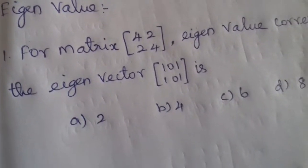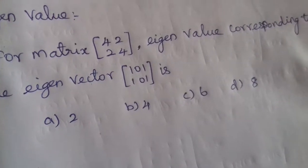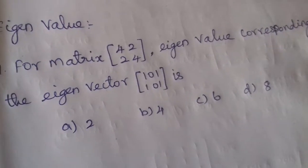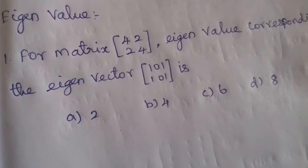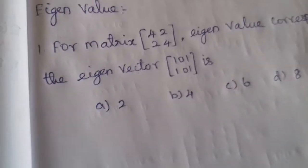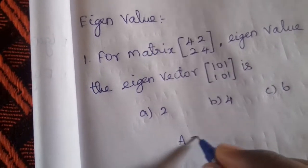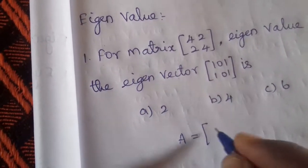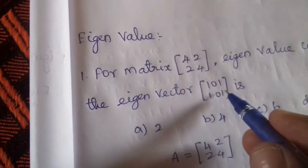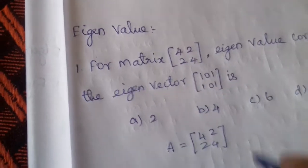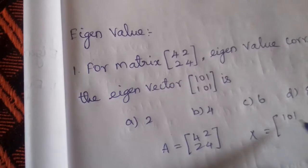The first problem: for matrix A = [[4, 2], [2, 4]], find the eigenvalue corresponding to the eigenvector x = [1, 1].